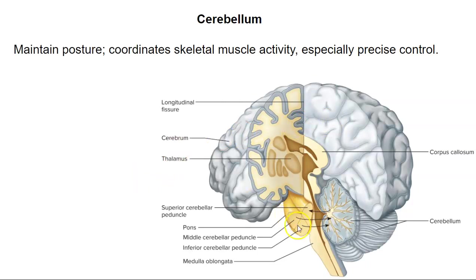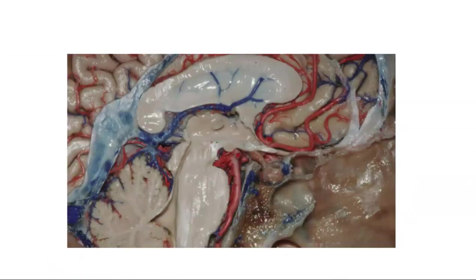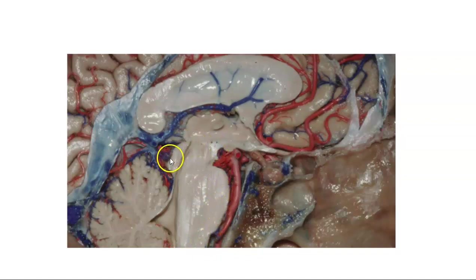The cerebellum coordinates skeletal muscle activity — specifically precise motor control. If you were to reach out and touch something, you can still do that with cerebellum damage, but the motion won't be smooth. The cerebellum coordinates motion to make it smooth and precise. To summarize: the thalamus, hypothalamus, and pituitary gland make up key parts of the diencephalon; the brainstem consists of the midbrain, pons, and medulla oblongata; and the cerebellum handles movement coordination.